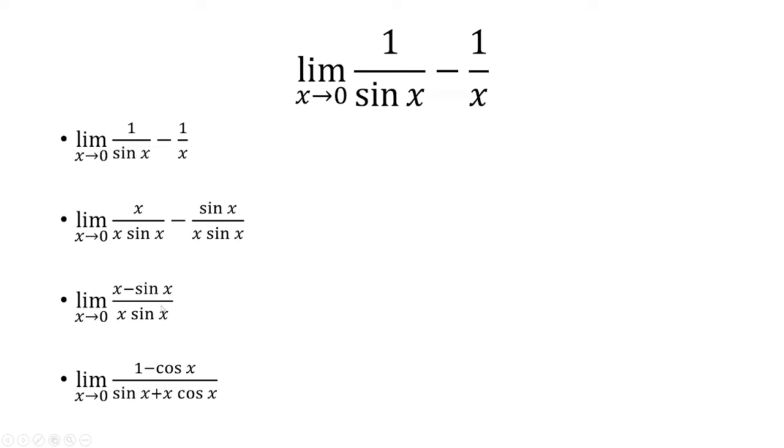We're going to use L'Hopital's rule, which means take the derivative of the top and the bottom. The derivative of the top is 1 minus cosine of x. The derivative of the bottom, we have to use a product rule, which is sine of x plus x times cosine of x.